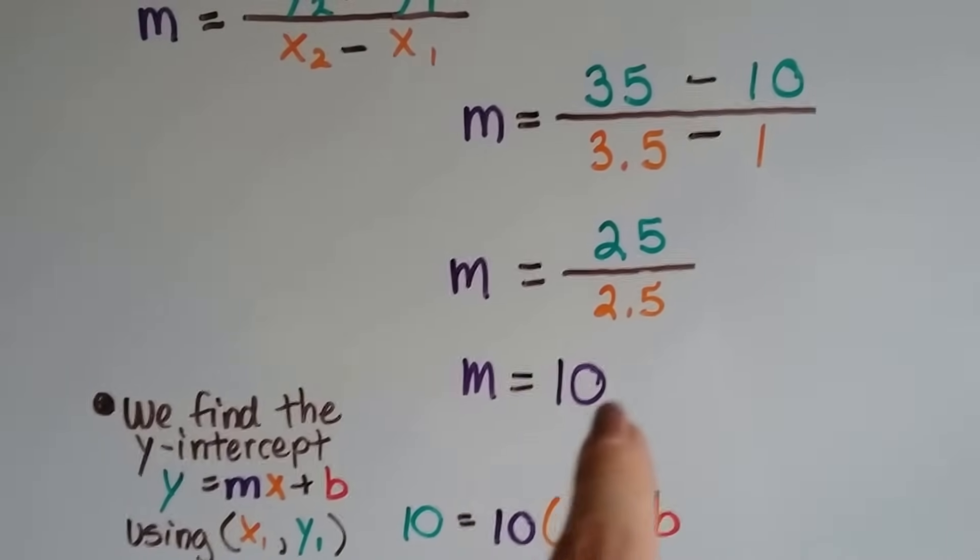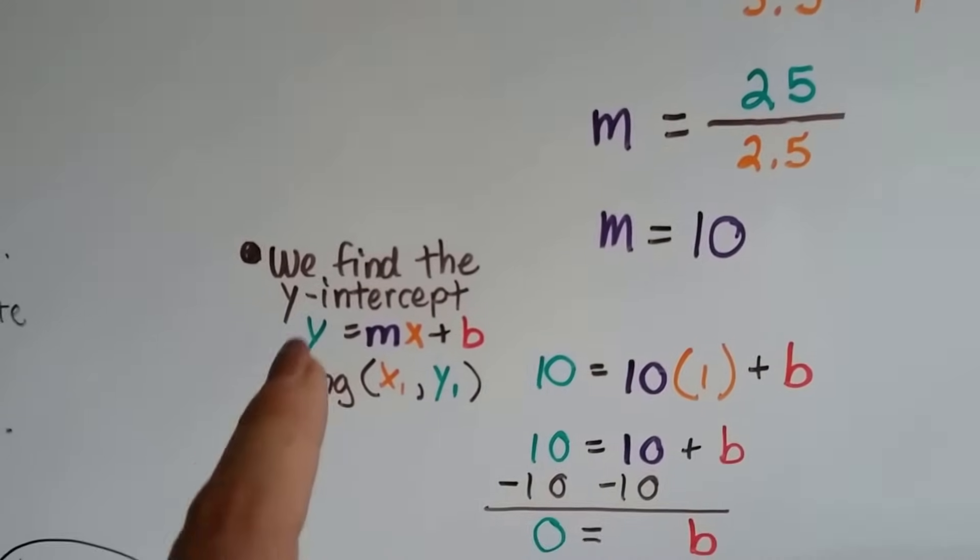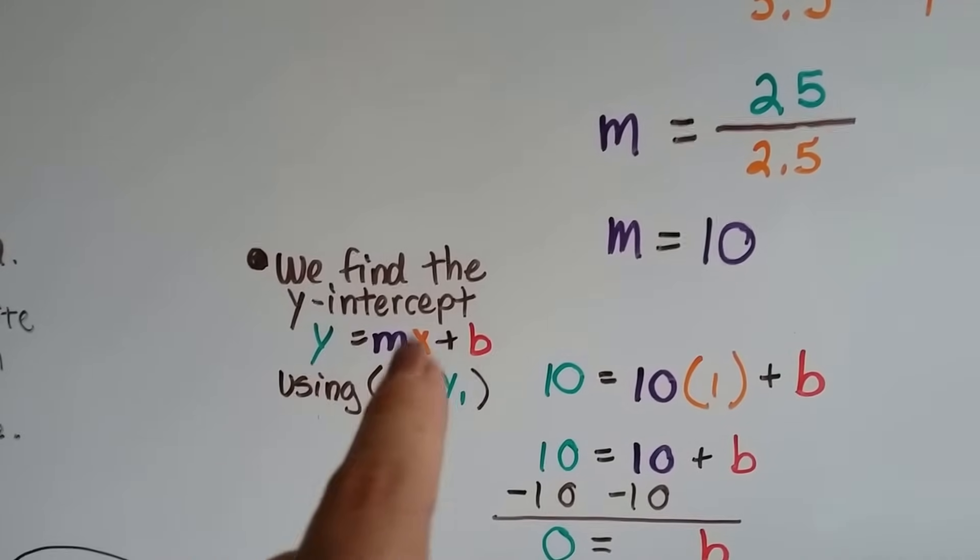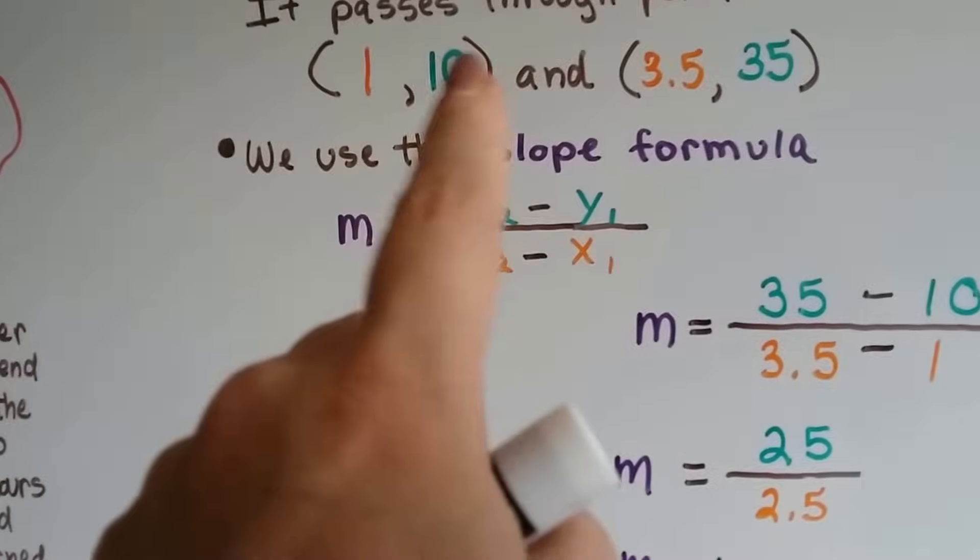So, we now know that m equals 10. And, remember, m stands for the slope. Now, we find the y-intercept in the slope-intercept form, y equals mx plus b. And, we're going to use the 1 values, the x1, y1 values, the 1 and the 10, to do this.